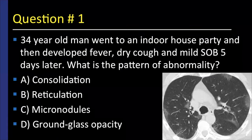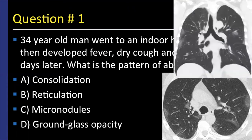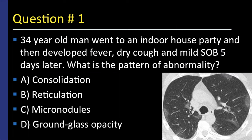Let's see if you've processed some of this information. This is the case of a 34-year-old man who went to an indoor house party and then developed fever, dry cough, and mild shortness of breath five days later. What is the pattern of abnormality? Here's the coronal reconstruction showing similar findings. This is a case of ground glass opacity and COVID-19 pneumonia. In the early stages, we often see peripheral, sometimes nodular ground glass densities favoring the lower lung zones.